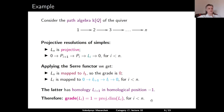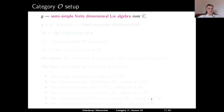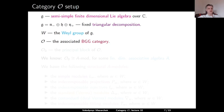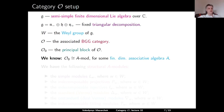Let us now go to the category O setup. Let G be a semi-simple finite-dimensional complex Lie algebra with a fixed triangular decomposition into the direct sum of the negative part N-minus, the Cartan subalgebra H, and the positive part N-plus. Let W be the Weyl group of G, and O be the Bernstein-Gelfand-Gelfand category associated to this triangular decomposition. Let O_0 be the principal block of O. We know that O_0 is equivalent to the category of modules over some finite-dimensional associative algebra, which until further notice we denote by A. We have the following families of structural A-modules, all indexed by elements of the Weyl group.